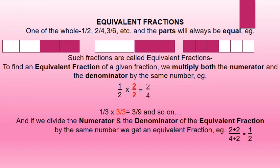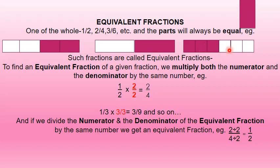Equivalent fractions. For 1 half of a whole: 1 upon 2, 2 upon 4, 3 upon 6, etc., all represent the same value and the parts will be equal. For example, 2 parts of 4 make the equivalent fraction 2 upon 4, and 3 parts of 6 make the equivalent fraction 3 upon 6. Such fractions are called equivalent fractions.